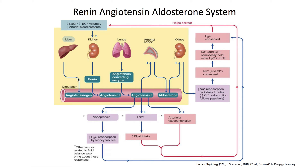So renin converts angiotensinogen to angiotensin 1. And then angiotensin converting enzyme from the lungs — it's not only in the lungs, but it's primarily in the lungs — converts angiotensin 1 into angiotensin 2. Now angiotensin 2 is one of the big players here, and it has a few different effects.